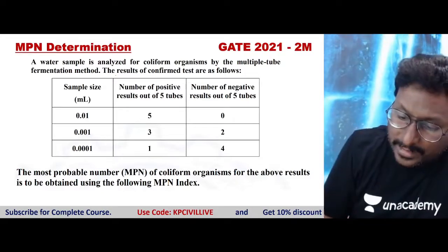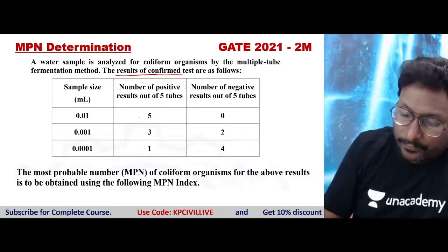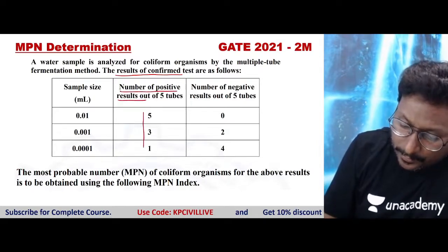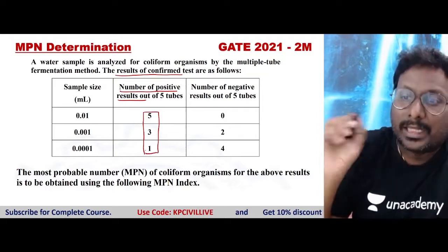First table is confirmed results table. From the confirmed results table, take number of positive results. What are the number of positive results? 5, 3, 1.